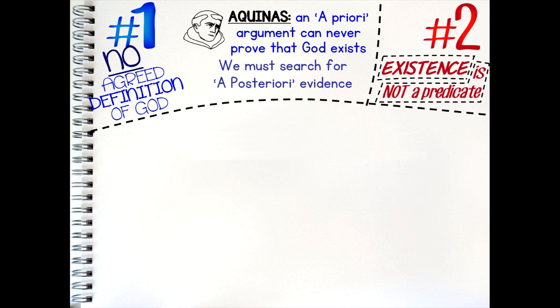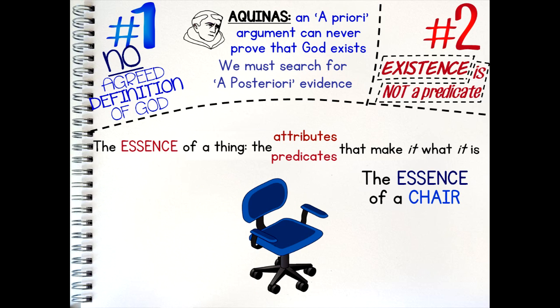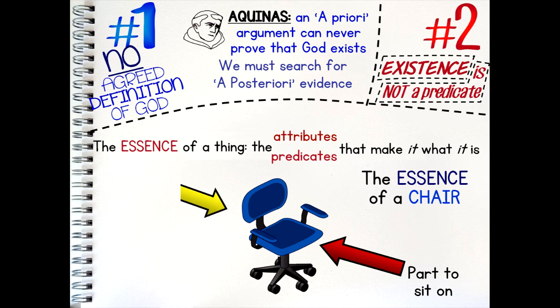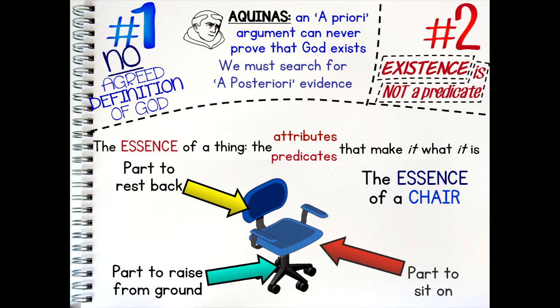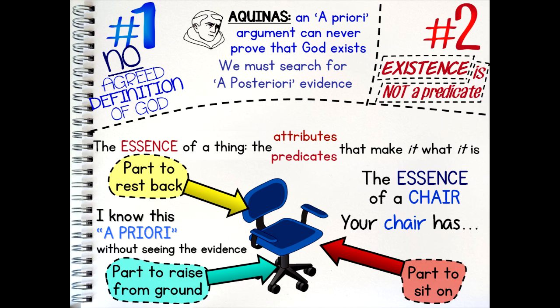Secondly, some critics have claimed that existence cannot be treated as a real predicate of a subject. To put it another way, we cannot say that existence can be part of the essence of a thing. The essence of a thing are those attributes, or predicates, that are essential to make that thing what it is. For example, the essence of a chair is made of three things: to be a chair, a thing must have a part to sit on, a part to rest your back, and a part that raises it off the ground. Take away any one part and you no longer have a chair. I can tell you, without even seeing your chair, that it has a part to sit on, a part to rest your back, and some part that raises it off the ground. I know these truths a priori, without needing to see the evidence for myself.